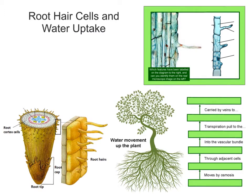To start this video, what I want you to do is look at the right side of the screen. It's the same image that I show my own students. I've got a microscope image on the left and a simple diagrammatic version of that on the right. The question asks which features have been labelled on the diagram to the right, and can you identify them on the real microscope image on the left?